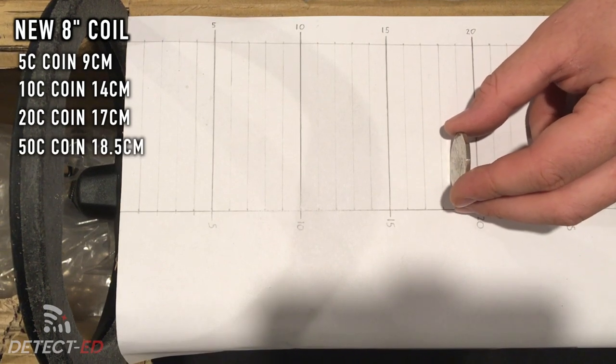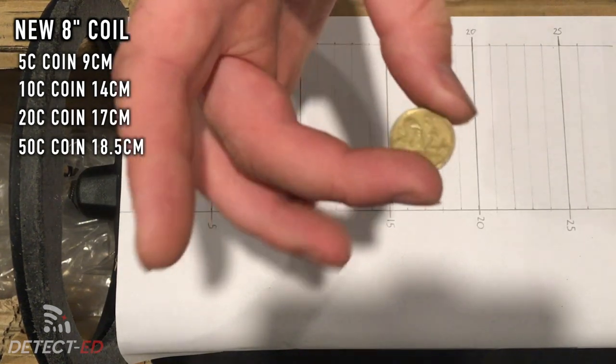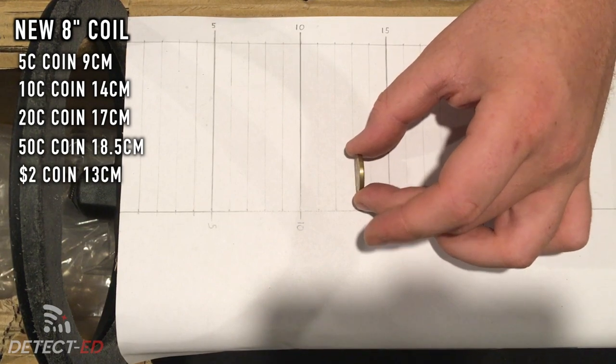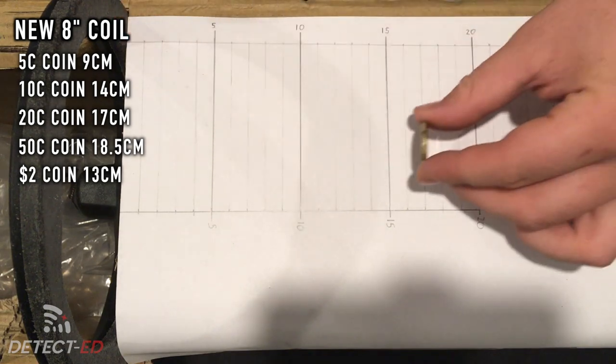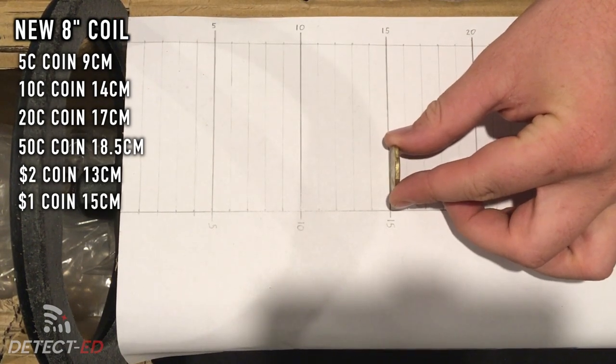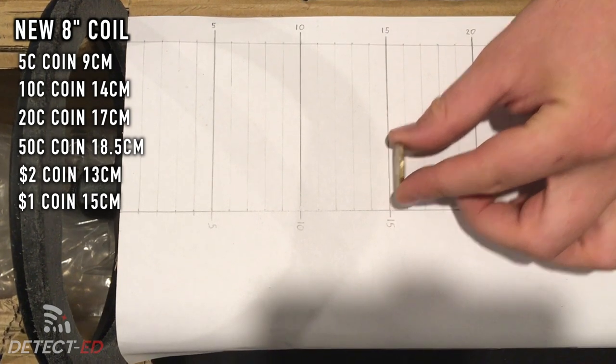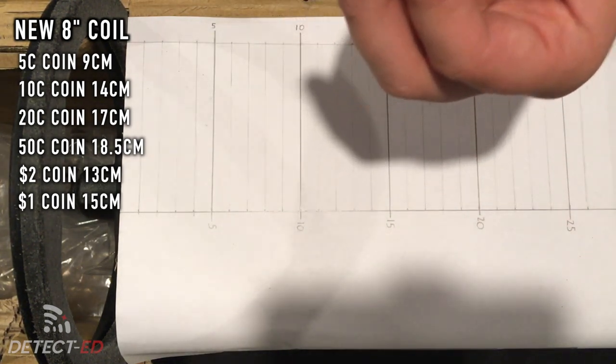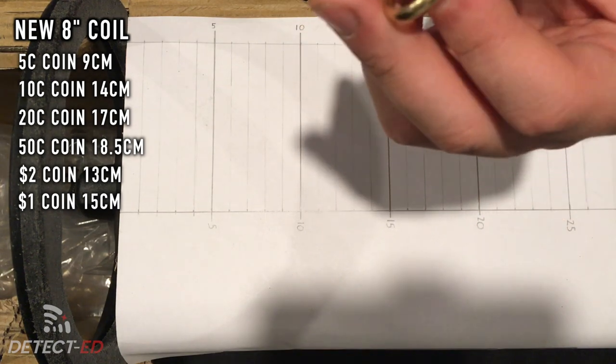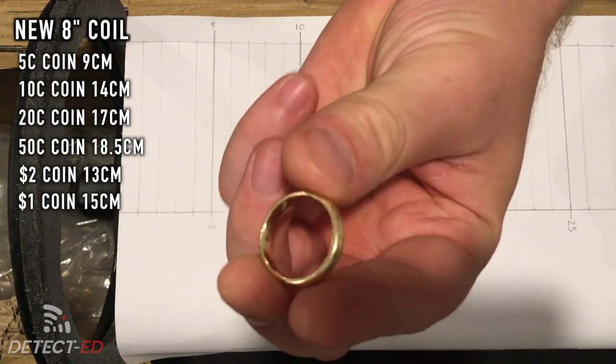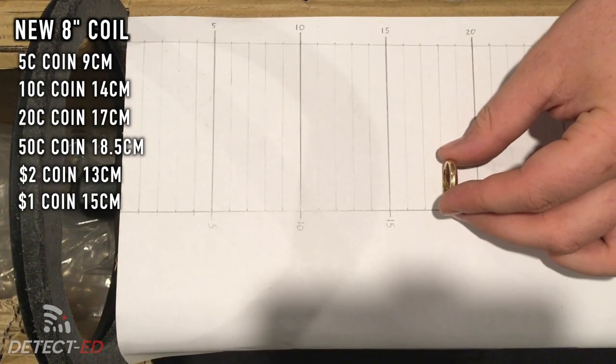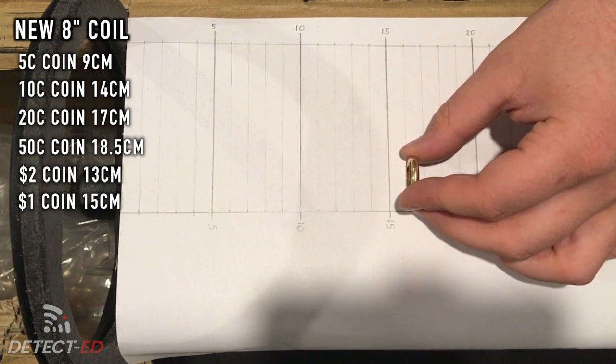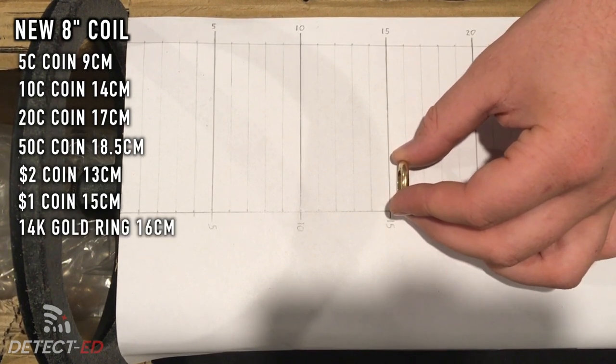50 cents, 18.5. Now $2 coin, 13. Now $1 coin, 15. Now this is your most average gold ring, it's 14k and about 5.6 grams. This is basically your most middle of the line ring in terms of weight and carat. Easily 15, you can get it at 16, 15.5 pretty consistent.